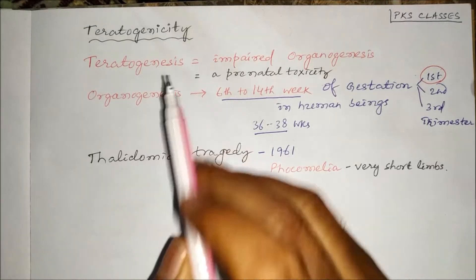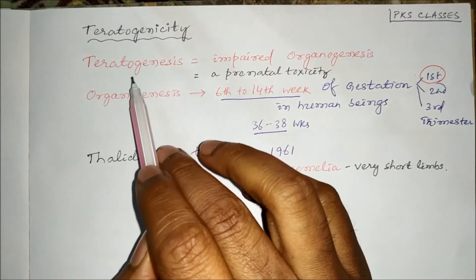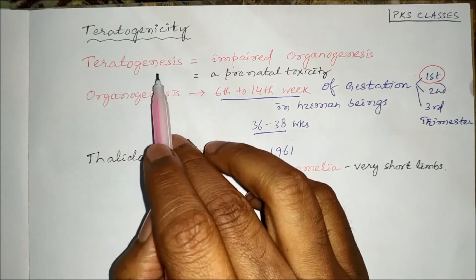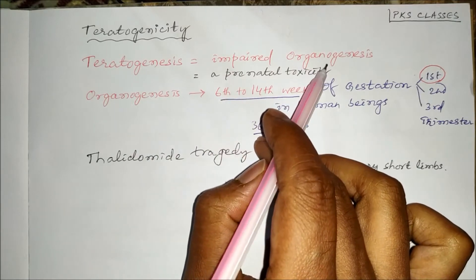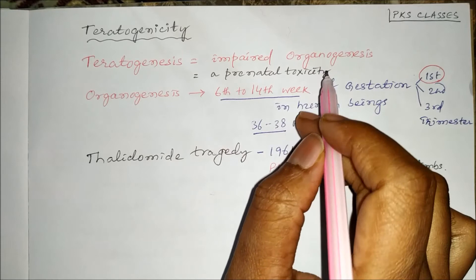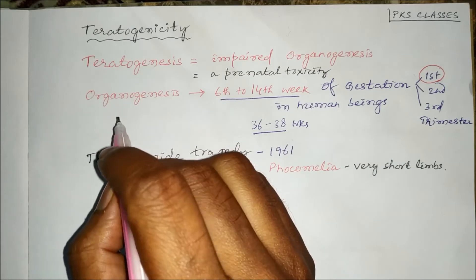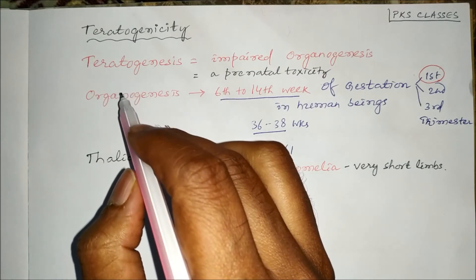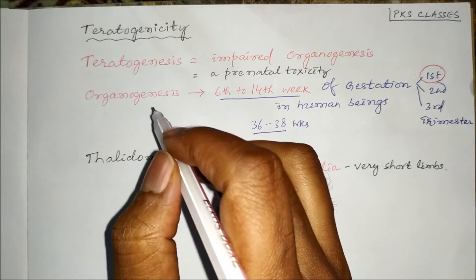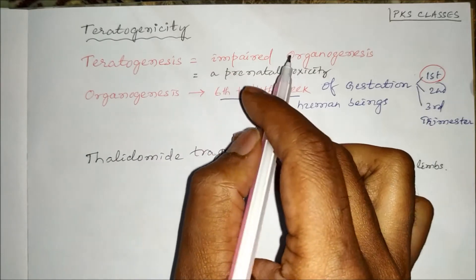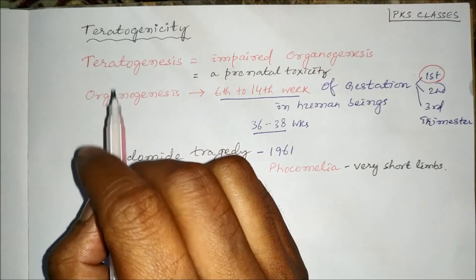Namaskar. Today we will study teratogenicity. Teratogenicity is derived from the word teratogenesis, which is also called impaired organogenesis. Organogenesis is the process of formation of organs in the fetus. If any drug is damaging the embryo or fetus — mostly during the formation of organs — then we call that process teratogenesis.